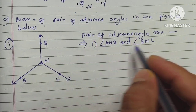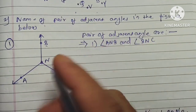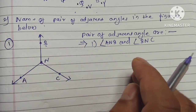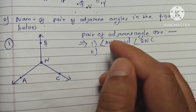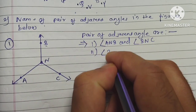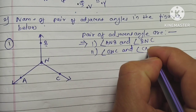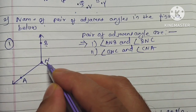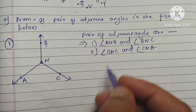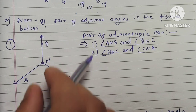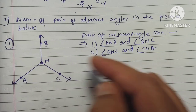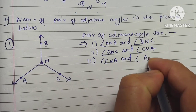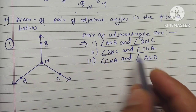Angle BNC has its interior on one side, and angle ANB has its separate interior on the other side. The second pair is angle BNC and angle CNA. These two angles share common vertex N and have separate interiors.